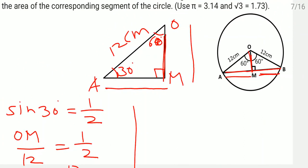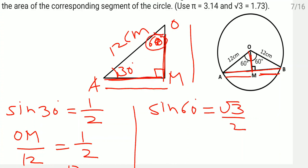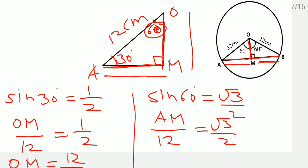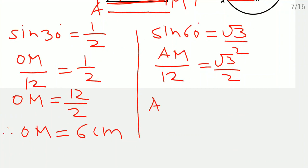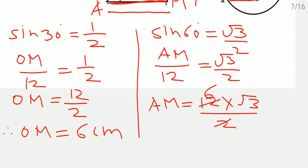Now to find AM, we use sin 60 degree which equals root 3 by 2. The opposite side of 60 degree is AM, so AM divided by hypotenuse 12 centimeter equals root 3 by 2. Therefore AM equals 6 root 3 centimeter.